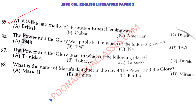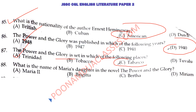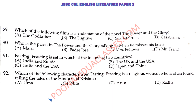Ernest Hemingway's nationality is American. The Power and the Glory is a 1940 novel, and in 1947 it was adapted into a movie also. That movie's name is The Fugitive. The Power and the Glory is set in which of the following places? That discussion has happened many times before — the answer is Tabasco. The name of Maria's daughter in the novel The Power and the Glory is Brigitta. Which of the following films is an adaptation of the novel The Power and the Glory? I tell you, you should be very alert when reading literature. The Fugitive is the right answer here.